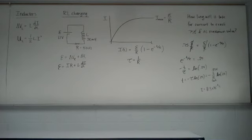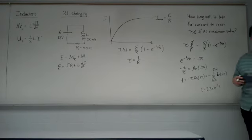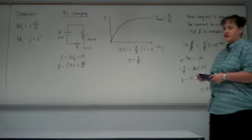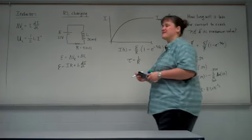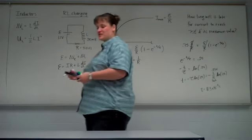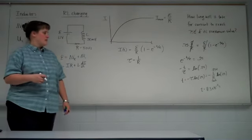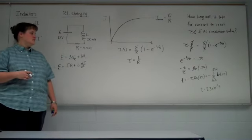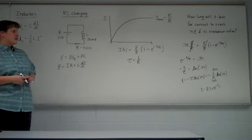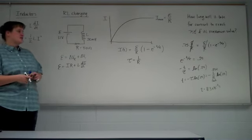This circuit very quickly reaches 75% — the answer is 8.3 times 10 to the negative 4 seconds. Not much time at all, and that's because the inductor is really small. The bigger the inductor, the longer it's going to take for things to happen.